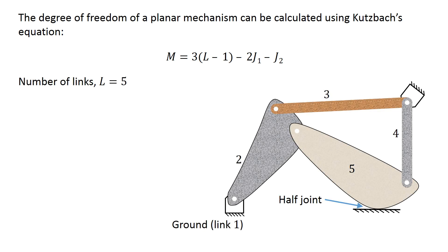This mechanism comprises of 5 links. There are 5 binary joints and 1 ternary joint in this mechanism.